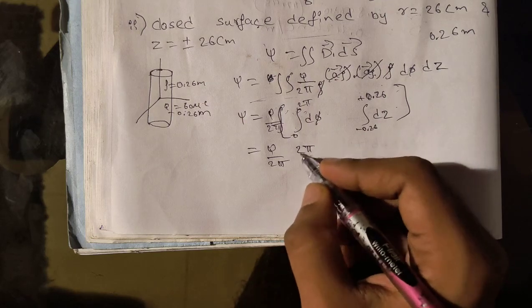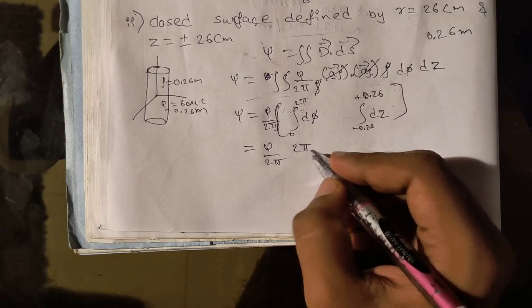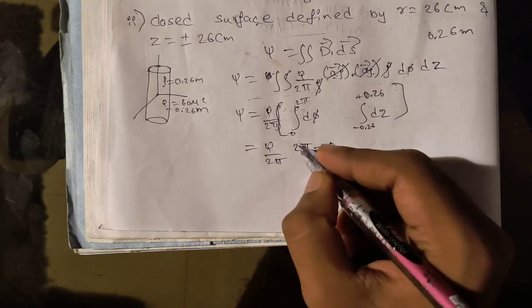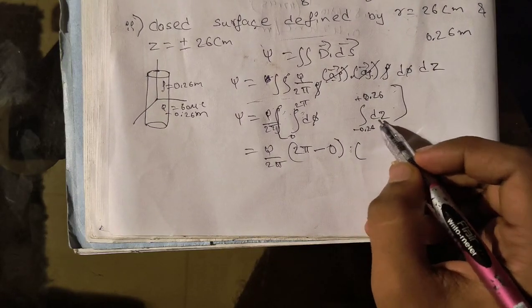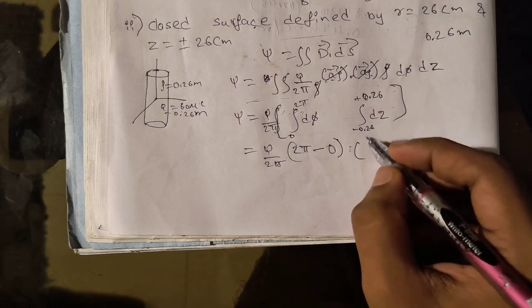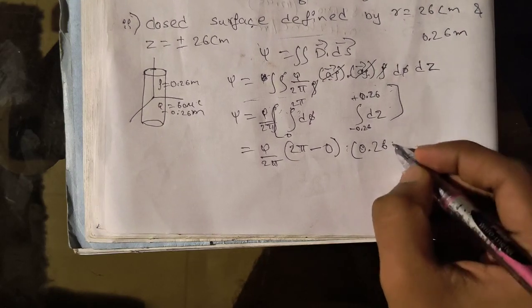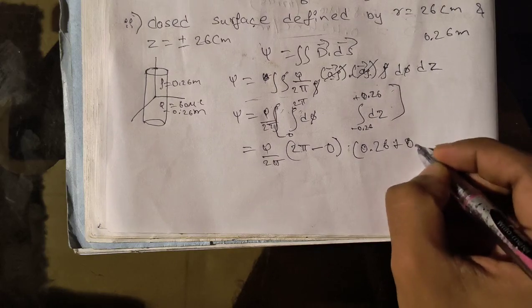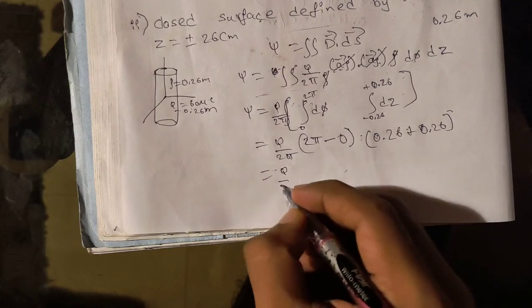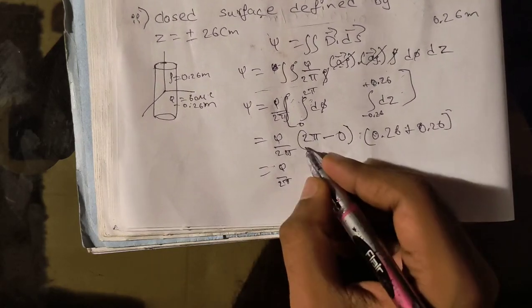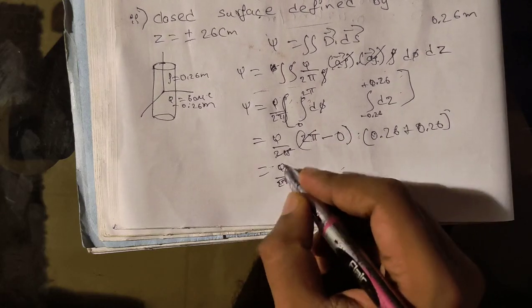Now integrate separately. For the first integration, nothing is given here, so we can write for φ, 0 to 2π. And for z, it is given as 26, that is 0.26, plus or minus, so minus 0.26 to plus 0.26 dz. By integrating, integration of dφ is φ only.